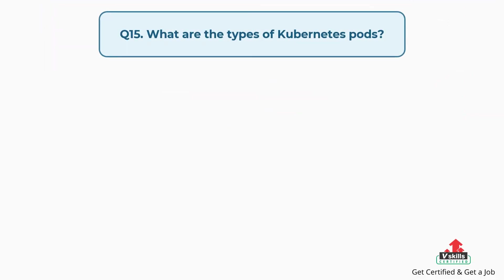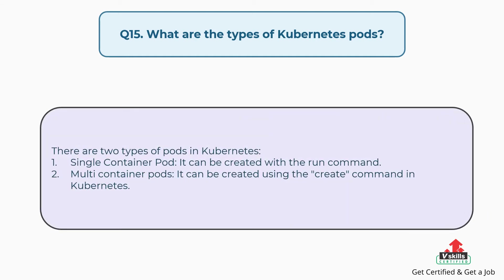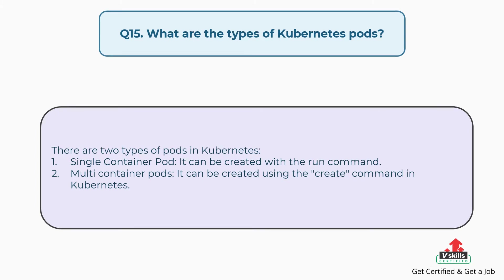Question number fifteen: What are the types of Kubernetes pods? There are two types of pods in Kubernetes. First, single container pod — it can be created with the run command. Second, multi-container pods — it can be created using the create command in Kubernetes.